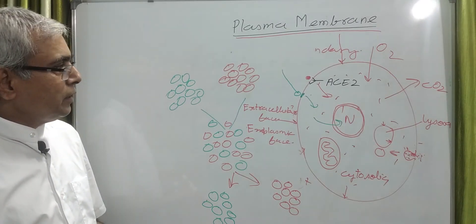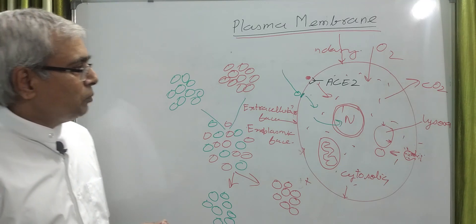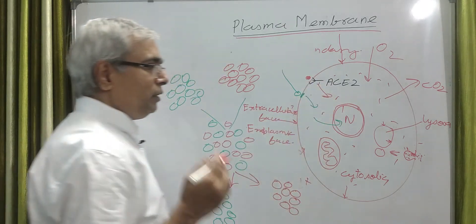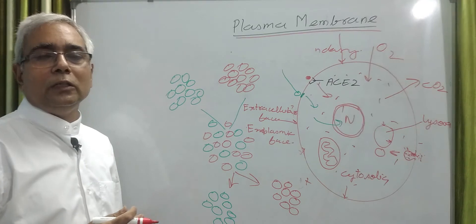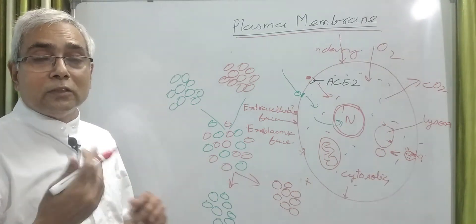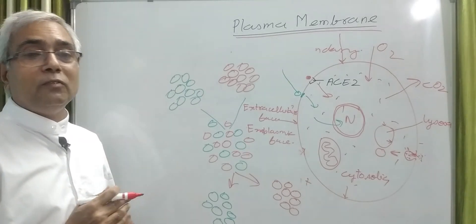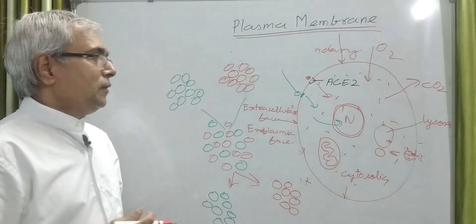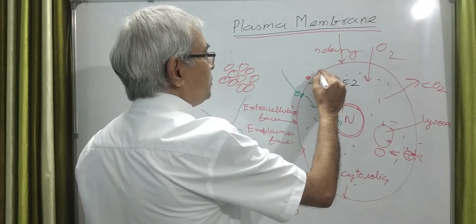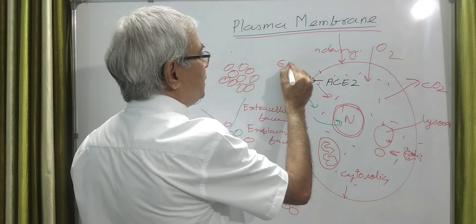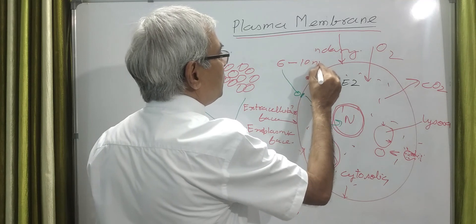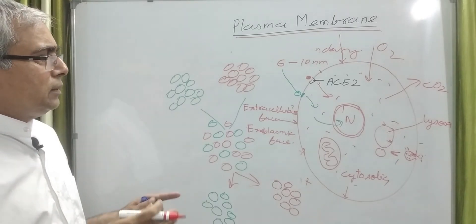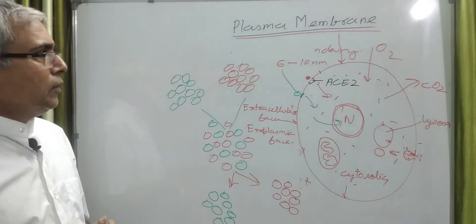Now we will come to certain basic facts. The thickness of this plasma membrane - this is a very thin membrane, it cannot be seen through the light microscope. This confirmation came in 1950. You can say the thickness of this plasma membrane varies from 6 to 10 nanometers, though in different membranes its size varies.